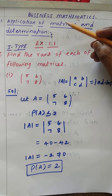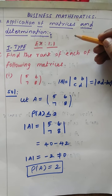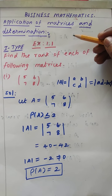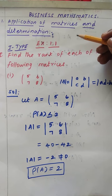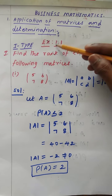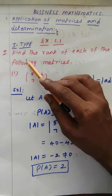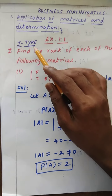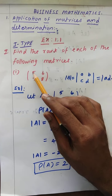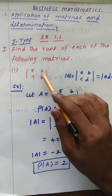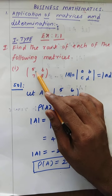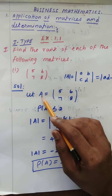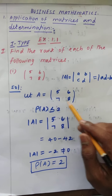Good morning students. Now we are going to discuss the 12th business mathematics first lesson, named application of matrix and determinant, exercise 1.1. So find the rank of each of the following matrices. First, given the 2×2 matrix [5, 6, 7, 8]. So let A equal to [5, 6; 7, 8].